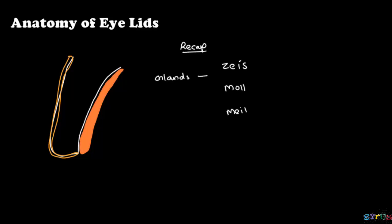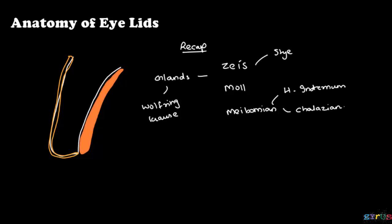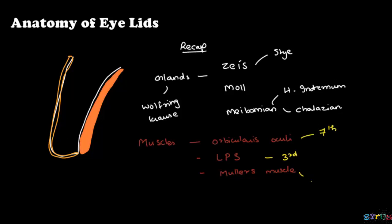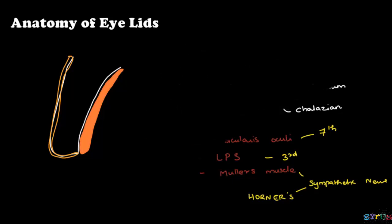To recap: glands include Zeis, Moll, and the Meibomian glands. Accessory glands are Wolfring and Krause. Inflammation of the Zeis and Meibomian glands is called stye and hordeolum internum respectively. The granuloma of the Meibomian is chalazion. Muscles include orbicularis oculi, levator palpebrae superioris, and Müller's muscle. Nerve supply: orbicularis oculi by the 7th nerve, LPS by the 3rd, Müller's muscle by the sympathetic nerve. Any damage to the sympathetic nerve due to Horner's syndrome causes a droop of the eyelid. Thank you for watching.